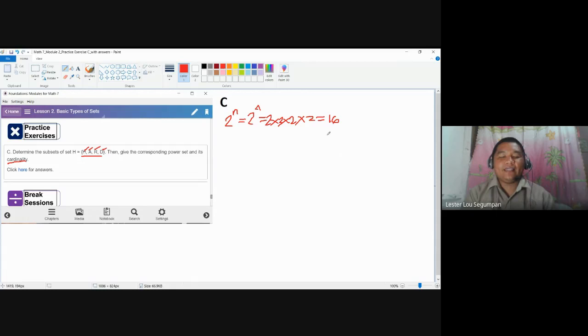So how do we write subsets? As we define subsets in our module as a set which contains n elements of the given set. So if we have a given set, set h containing letters h, a, r, and d...